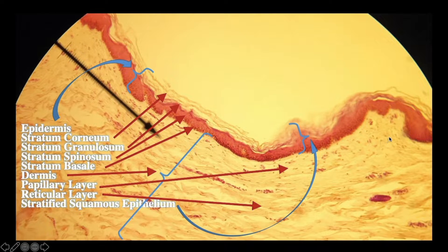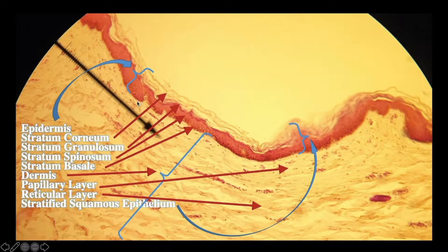The first thing you want to do when looking at a skin slide is orient yourself. The dermal papilla — you see this line right here, these little fingers that kind of go up and down — these are dermal papilla. This is the dermis: all this light pink down here is the dermis, and everything above, all this colored stuff all the way to the top, is the epidermis. So this line here is the dermal papilla.